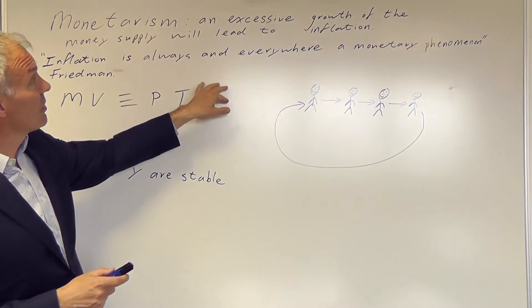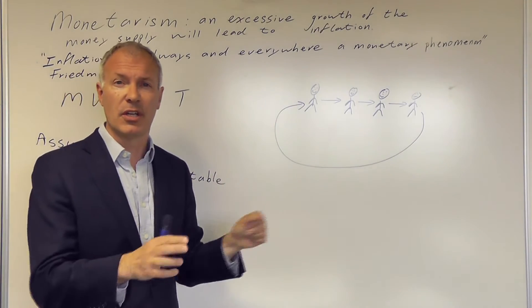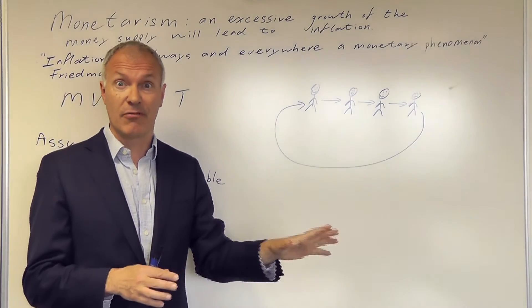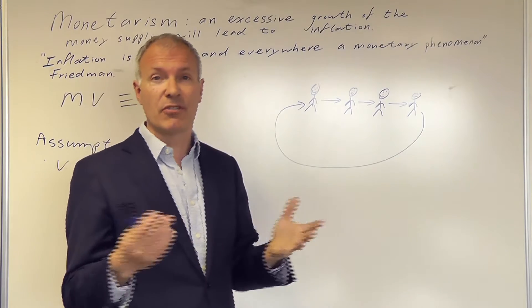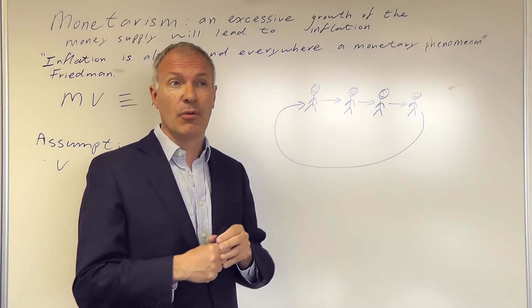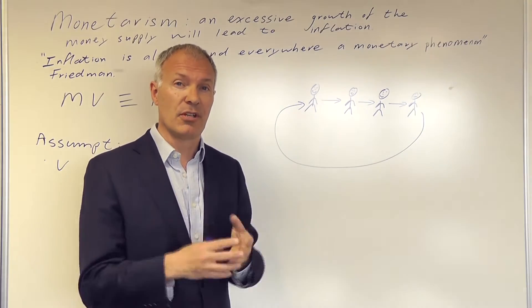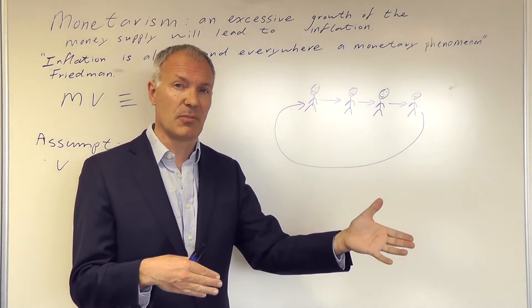This idea is that if you print an excessive amount of coinage, of notes and coins, it will result in inflation. We can see this clearly in the 1920s in the Weimar Republic with hyperinflation in 1924 as a result of an excess of growth of the money supply.